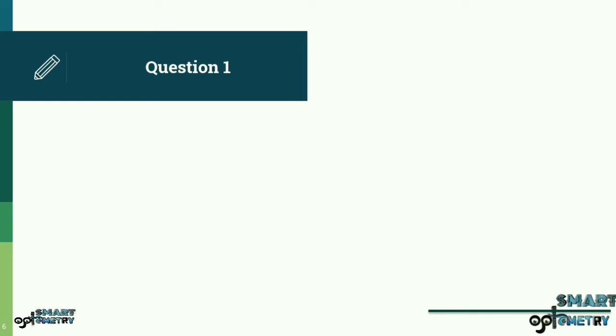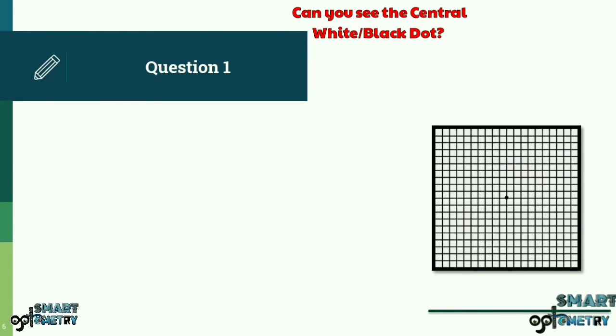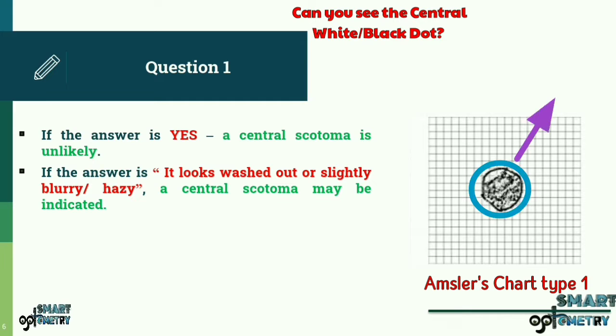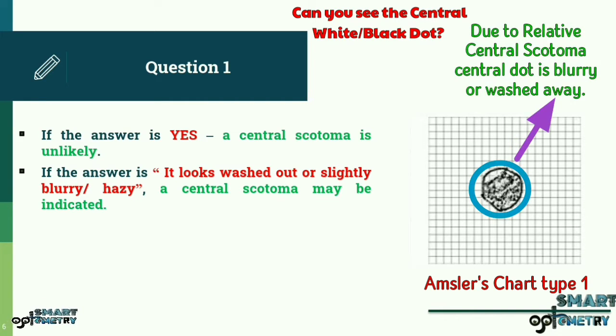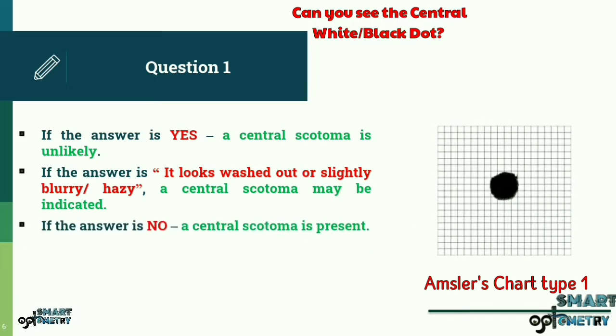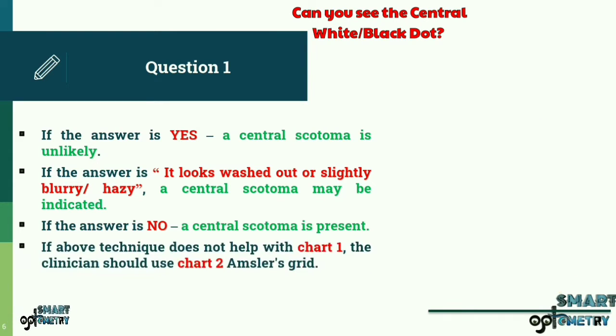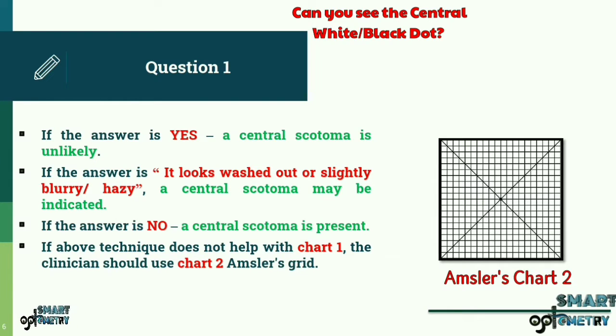Let us begin with the questions that we need to ask the patient in order to perform the Amsler's grid test. Question 1: Can you see the central white or black dot? The test can begin with patient viewing the chart 1 type Amsler's grid. The purpose of this question is to rule out a central scotoma, a central visual loss. If the answer is yes, a central scotoma is unlikely. If the answer is it looks washed out or slightly blurry or hazy, a central scotoma may be indicated. The patient is then asked to outline the limits of the area that appears blurry or hazy on the grid with a finger or a pen. If the answer is no, a central scotoma is present. The patient is then asked to outline the borders of the defect which is covering the central dot with a finger or a pen on the grid. If the above technique does not help with chart 1, the clinician should use chart 2 Amsler's grid.